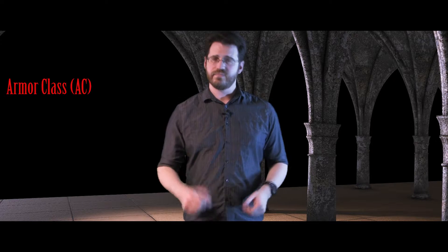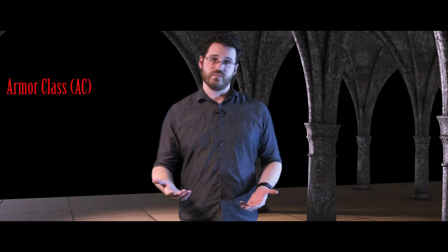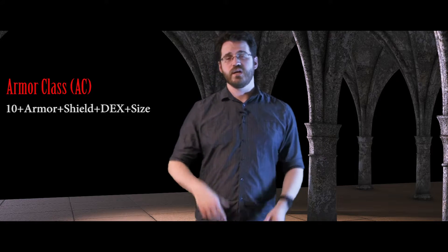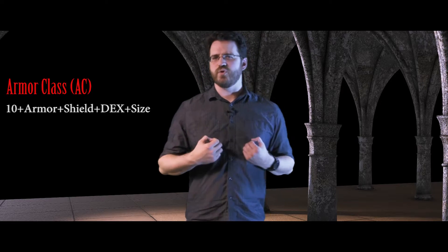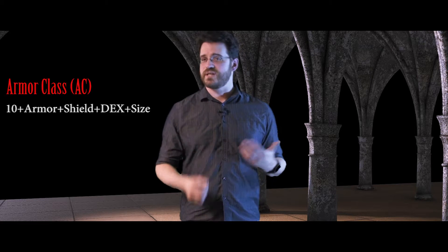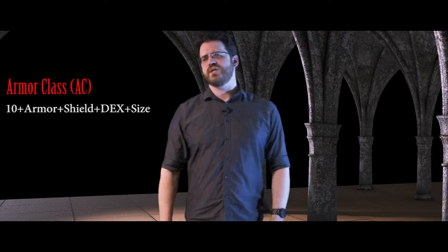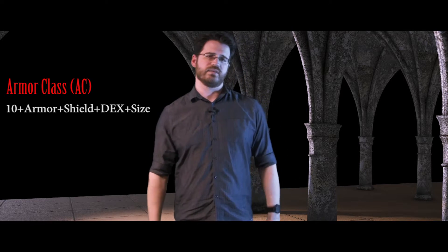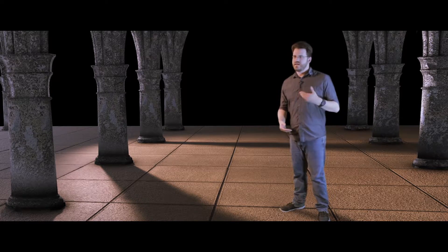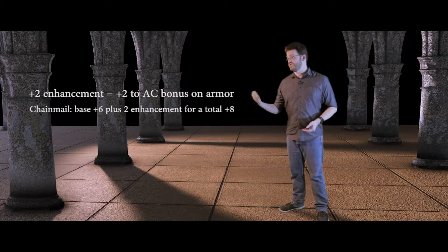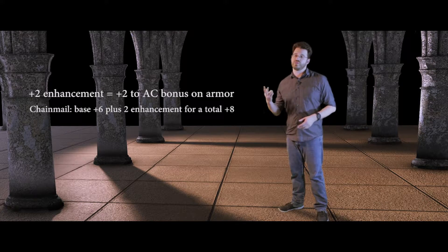Now let's look at your armor class, commonly referred to as your AC. This number represents how hard it is for someone to injure you, as it is the number someone has to equal or exceed on an attack roll to hit you and deal damage. Your AC is equal to 10, plus your armor bonus, your shield bonus, your dexterity modifier, and your size modifier. Note that the heavier an armor is, the more it restricts you and may limit how much of your dexterity modifier you can add. Check the maximum dexterity bonus entry for your armor. Other modifiers include enhancement bonuses — a plus two chain mail adds eight to your AC: six base, plus two for the enchantment.